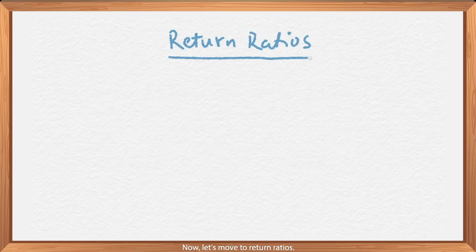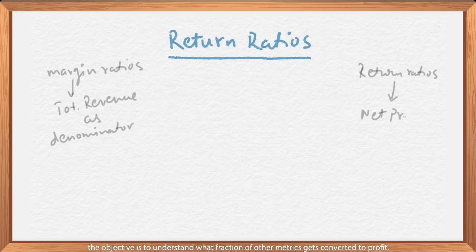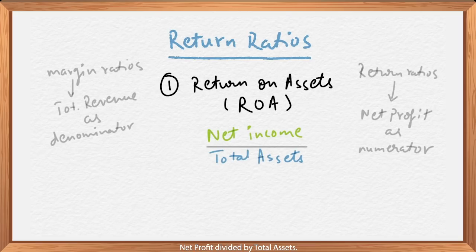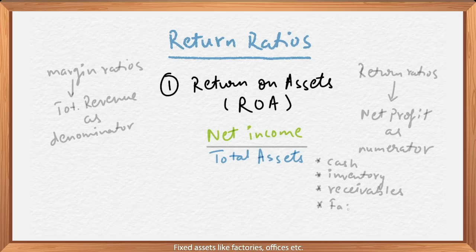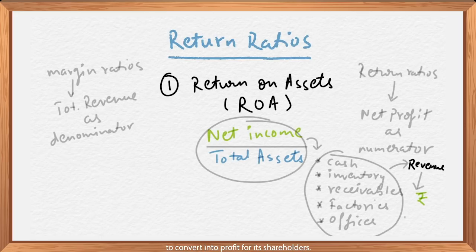Now let's move to Return Ratios. In margin ratios, we used total revenue as the denominator. In return ratios, we'll use net profit as the numerator — the objective is to understand what fraction of other metrics gets converted to profit. First up is Return on Assets. The formula is simple: net profit divided by total assets. Total assets includes cash or cash equivalents, inventory, receivables — the amount to be received by the company from its partners — and fixed assets like factories and offices. Return on Assets tells us how efficiently a company is employing these assets to convert into profit for its shareholders.